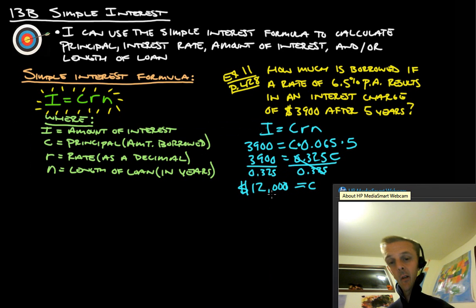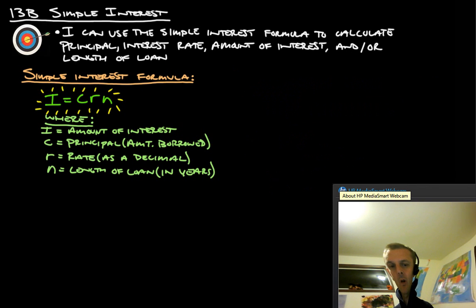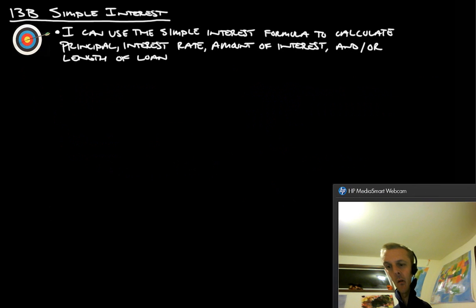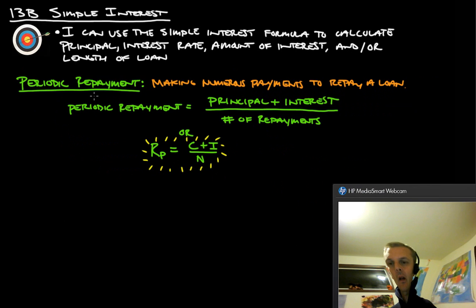Sorry. I just had to. Just kind of, you know, have a little fun here once in a while. So, let's get back to it. We have one last thing. And that is periodic repayment. Okay? Periodic repayment is making numerous payments to repay a loan. A very common periodic repayment interest example for that is a car loan.